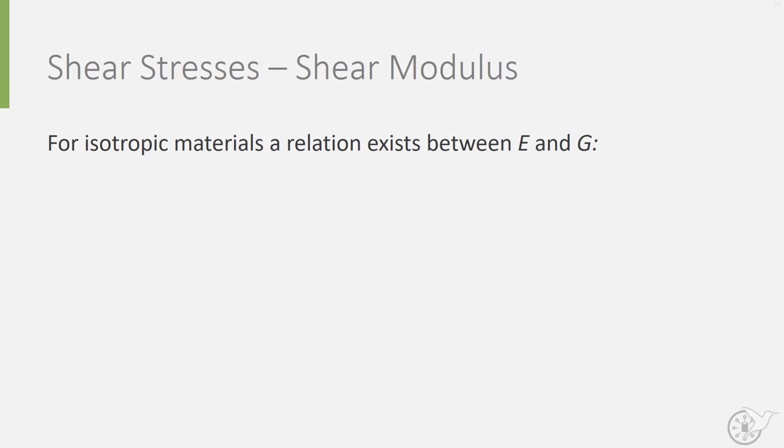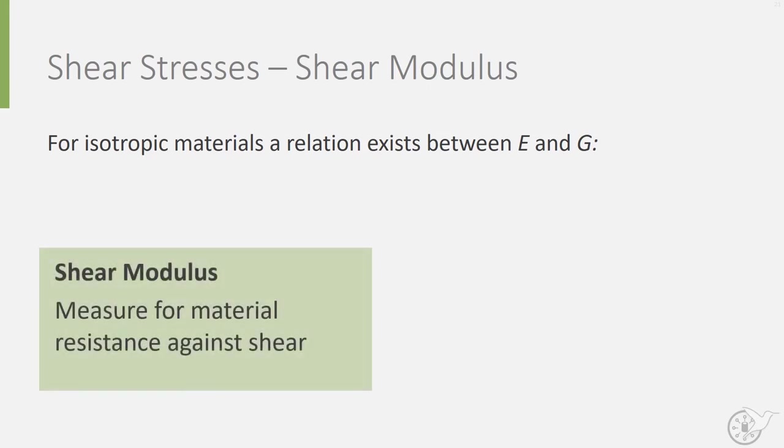Like the modulus of elasticity, the shear modulus is also a material property. For isotropic material, the modulus of elasticity E and the shear modulus G are related. The shear modulus G is then equal to the modulus of elasticity E divided by 2 times 1 plus the Poisson's ratio nu.